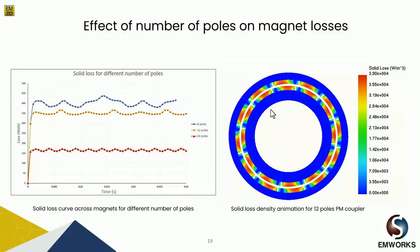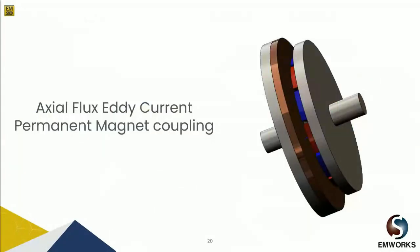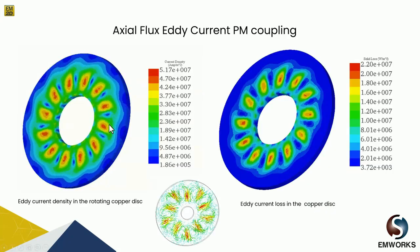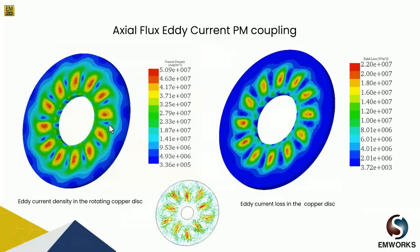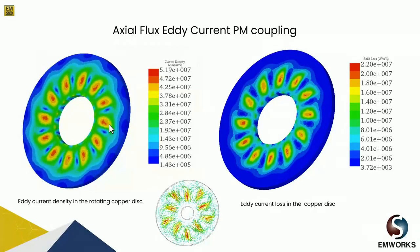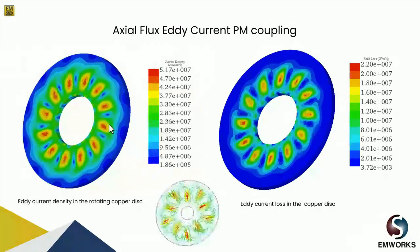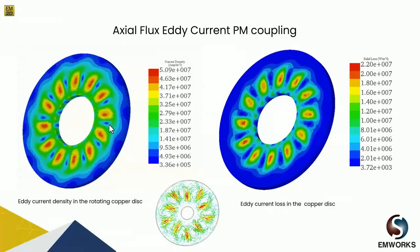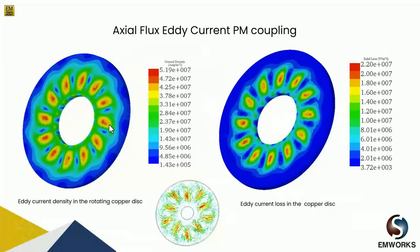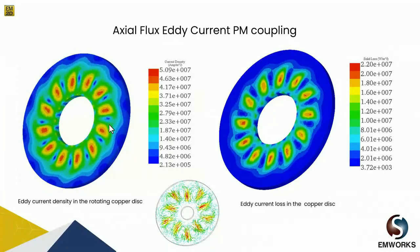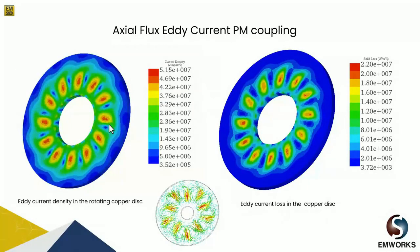Now we analyze the eddy current coupling machine, starting with the axial flux example having two rotors: one of permanent magnets and one of a conductive disc, with back iron plates added to reduce magnet field losses. Motion coupling is used to predict and evaluate induced eddy currents caused by rotating conductive material inside a static magnetic field. The animation of currents versus time is shown on the left graph.